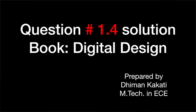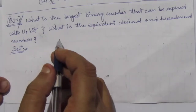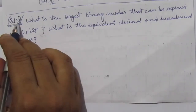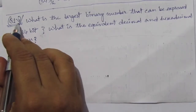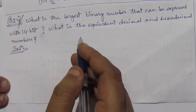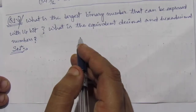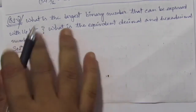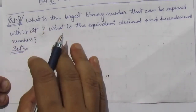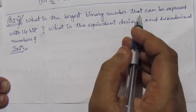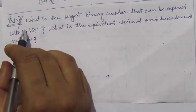Dear students, I welcome you all to this tutorial series in Digital Electronics. In today's video, I will solve problem number 1.4 of the book Digital Design by Maurice Mano and Michael Ciletti, fourth edition. The question is: what is the largest binary number that can be expressed with 14 bits?